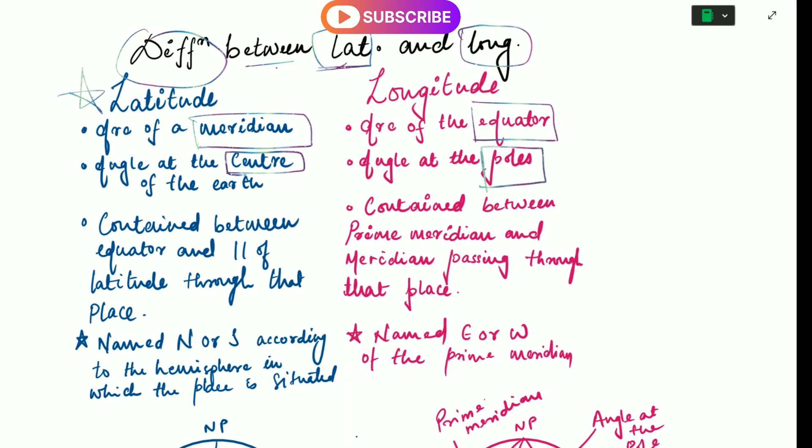Latitude is contained between the equator and the parallel of latitude through that place, whereas for longitude it is contained between the prime meridian and the meridian passing through that place.